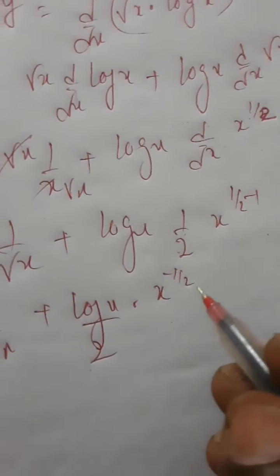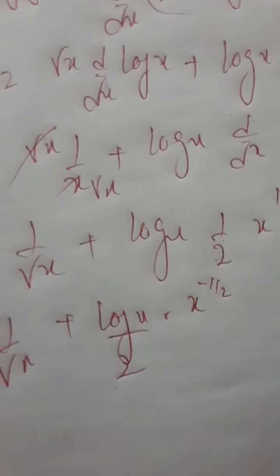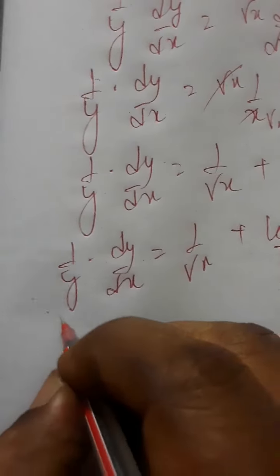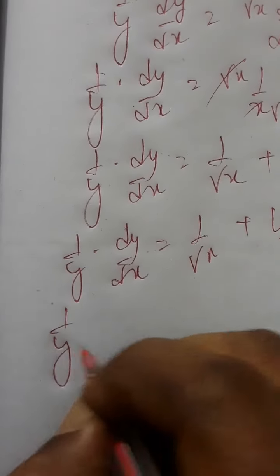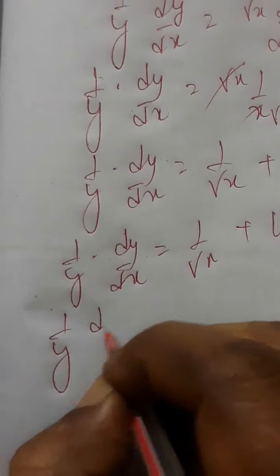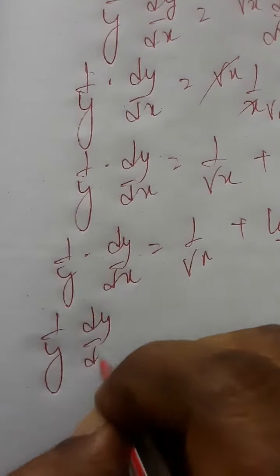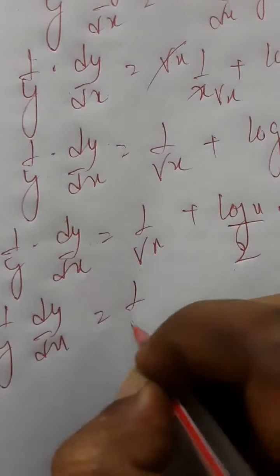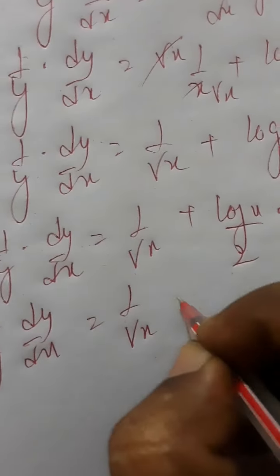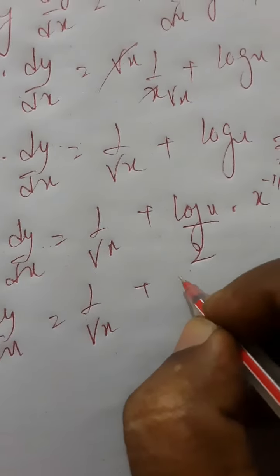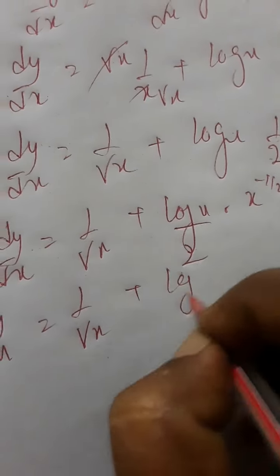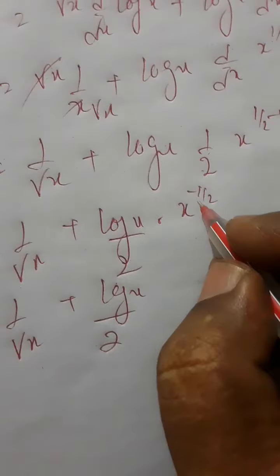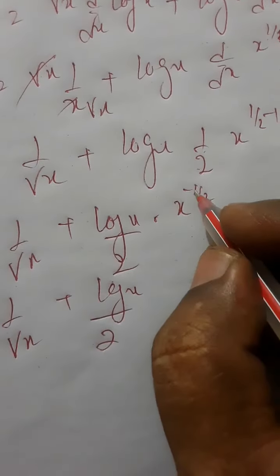x to the power of minus half means 1 by root x. So the next step gives 1 by y into dy by dx is equal to 1 by root x plus log x divided by 2 root x.